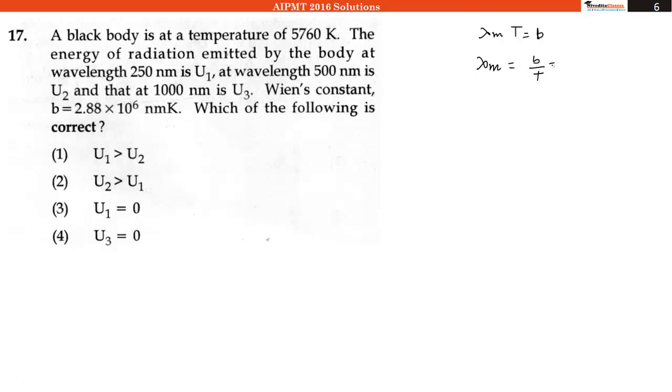And small b and capital T both are given. Small b is 2.88 into 10 to the power 6, divided by temperature 5760 Kelvin. After solving, we will get Lambda M, that is the wavelength of maximum intensity of radiation, that will be equal to 500 nanometer.